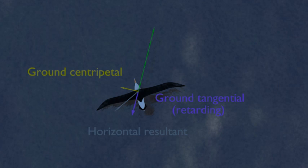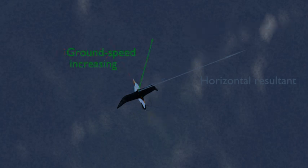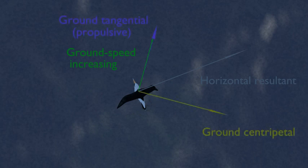In the leeward turn, now banking to the right, we can again see the drag force and the horizontal component of lift combining to form the horizontal resultant. Here is the same horizontal resultant with the ground velocity, and now with the ground tangential and ground centripetal forces. This time, the ground tangential force is propulsive and causes the ground speed to increase, because the angle of bank is on the same side as the angle of drift.